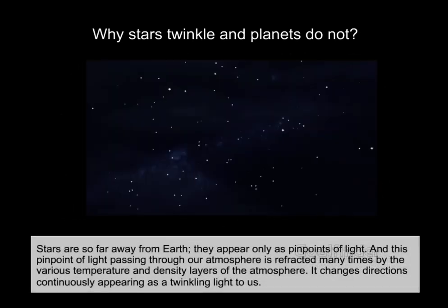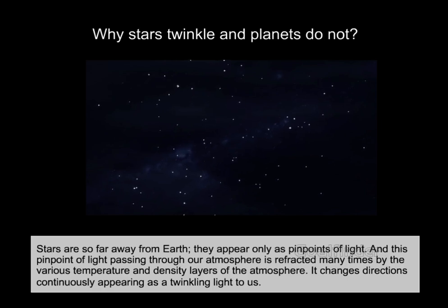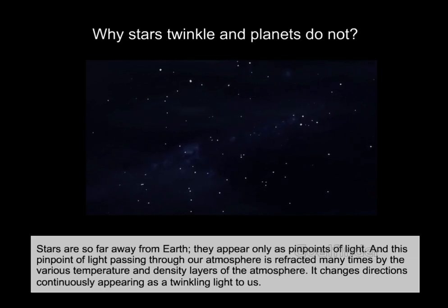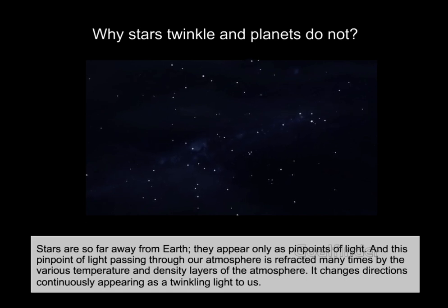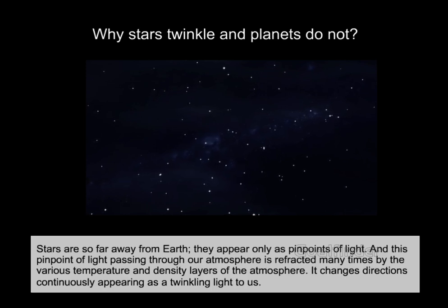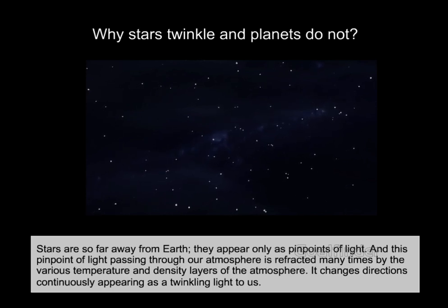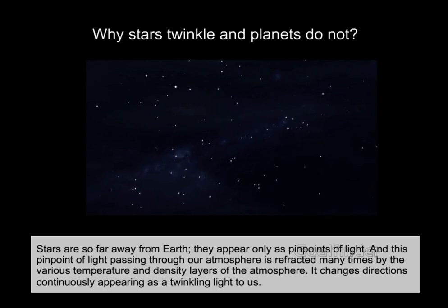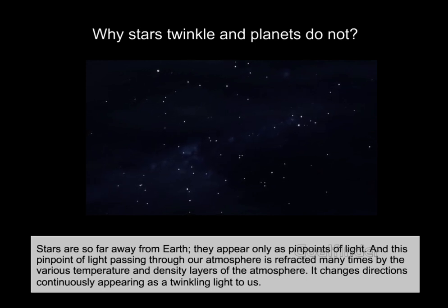Stars are so far away from the Earth that they appear only as tiny pinpoints of light. This pinpoint of light passing through our atmosphere is refracted many times by the various temperature and density layers of the atmosphere, changing directions continuously and appearing as a twinkling light to us.